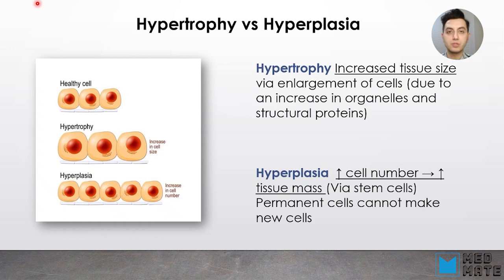Our cells and tissues are in equilibrium with the amount of stress that they are handling. So if there is any change to this amount of stress, then this tissue will undergo some changes. We are going to talk about these changes that can happen when there is a change in stress exerted on different tissues.